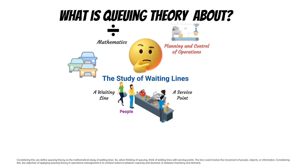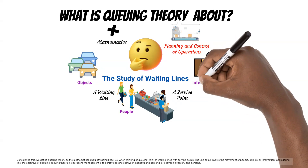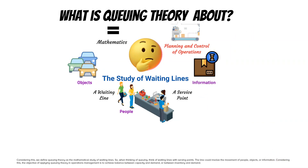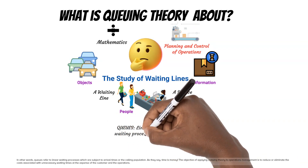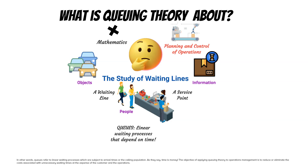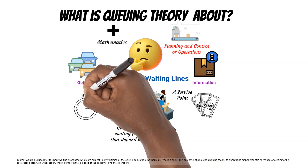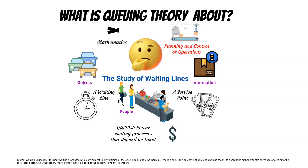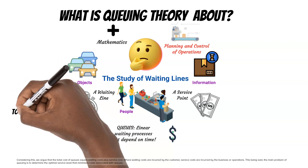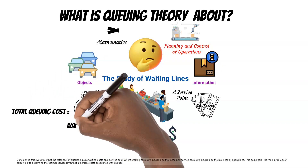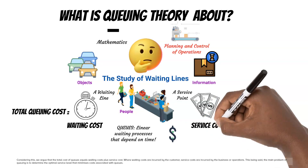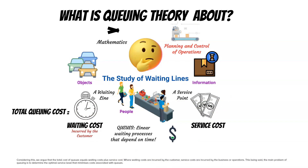The line could involve the movement of people, objects, or information. The objective of applying queuing theory in operations management is to achieve balance between capacity and demand, or between inventory and demand. In other words, queues refer to linear waiting processes which are subject to arrival times or the calling population. As they say, time is money. The objective is to reduce or eliminate the costs associated with unnecessary waiting times. The total cost of queues equals waiting costs plus service cost, where waiting costs are incurred by the customer and service costs are incurred by the business.